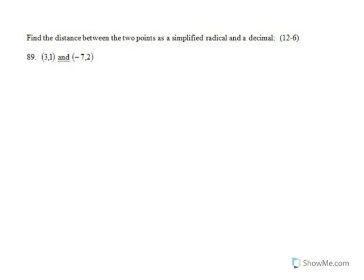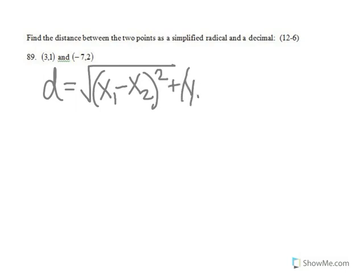Number 89, find the distance between the point 3, 1 and negative 7, 2. So, the distance formula is the square root of x1 minus x2 quantity squared plus y1 minus y2 squared.